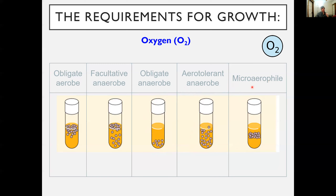A microaerophile — as the name suggests, 'micro' means small — needs small amounts of oxygen. Microaerophiles need oxygen because they cannot ferment or respire anaerobically, but they are poisoned by high concentrations of oxygen. They need that happy medium of having the amount they need but not so much that it's harmful. Thus, they accumulate in the middle of the test tube, not too close to the top.